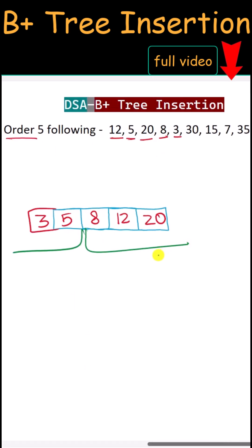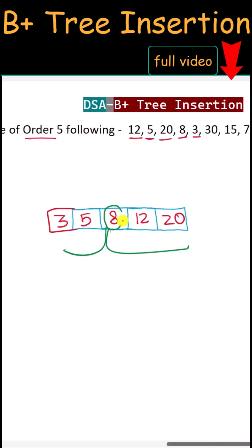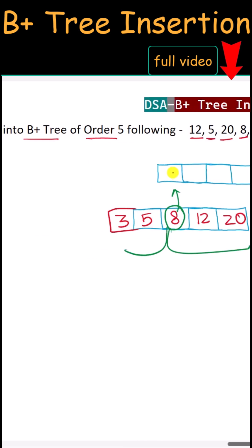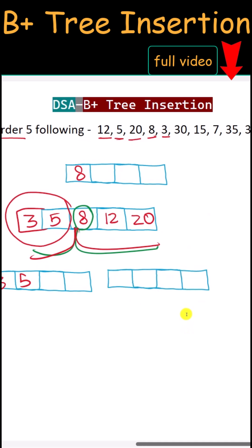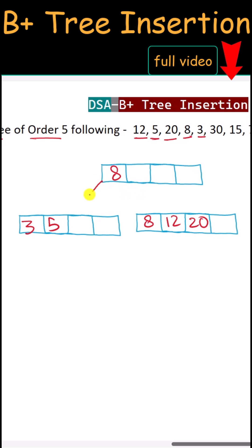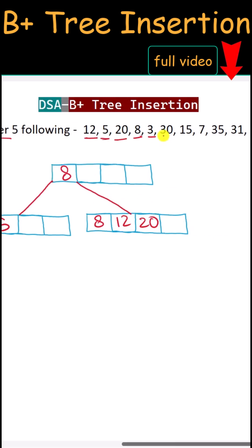8 is the median, so 8 will be lifted to the root node. On the left side we have values less than 8: 3 and 5. On the right side we have values greater than or equal to 8: 8, 12, and 20. The left pointer points to the left node and the right pointer points to the right node.